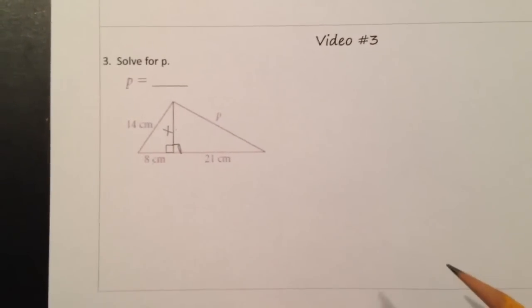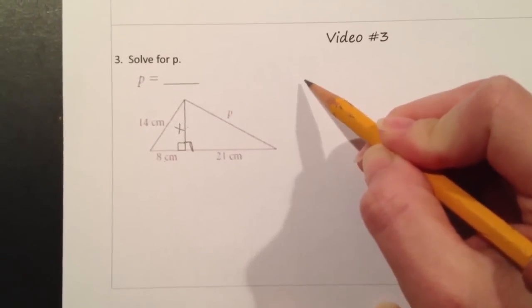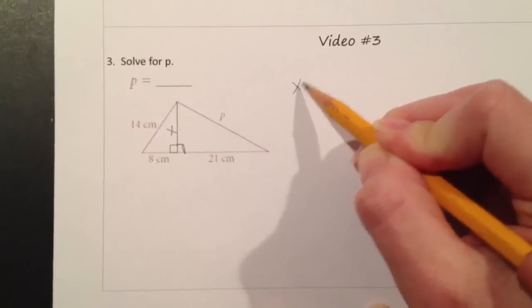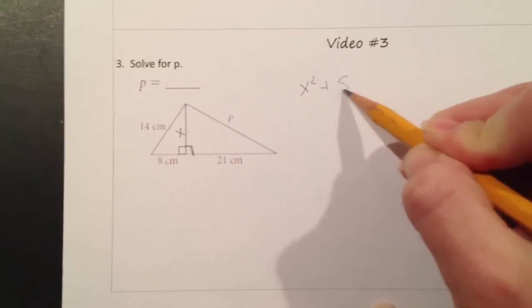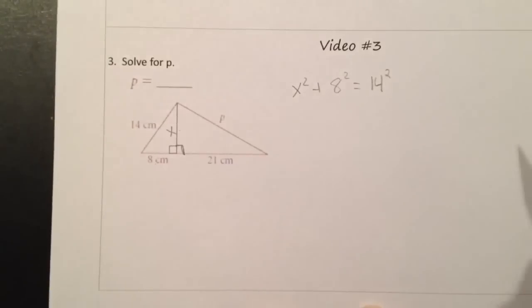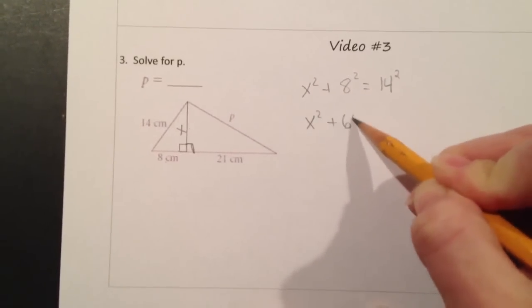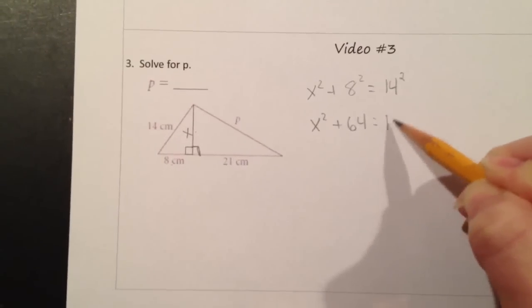To do that, that's very similar to the problem we did in video 2. We're going to set up our equation. We know that x squared plus 8 squared is equal to 14 squared, using the Pythagorean Theorem. To solve this, we have x squared plus 64 is equal to 196.